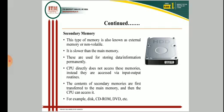Secondary memory is an external memory and is non-volatile in nature. It is relatively slower than main memory. However, it is used to store data or information permanently. The CPU, or central processing unit, is unable to access this memory directly, so it is always accessed through the input-output routine. The content of secondary memory is first transferred to the main memory, and then the CPU is able to access it. Common examples are disk, CD-ROM, and DVD.